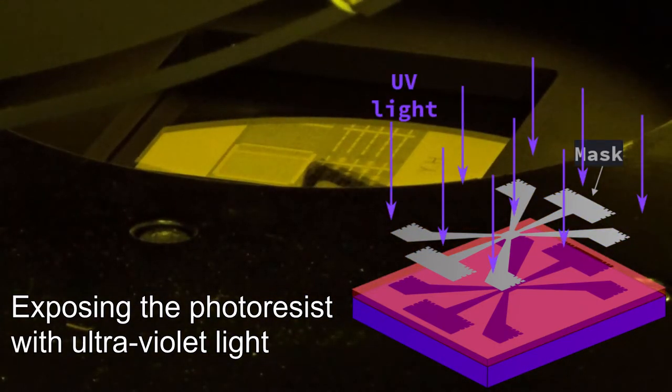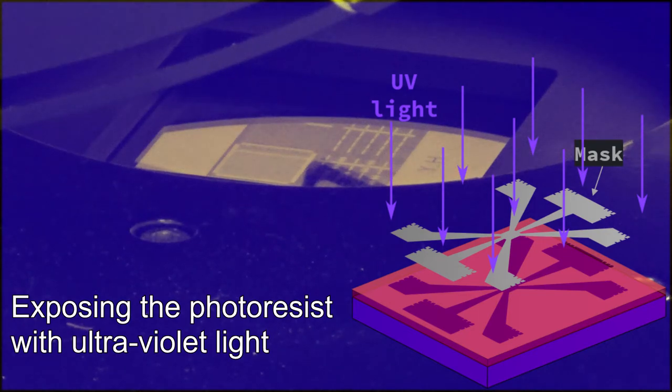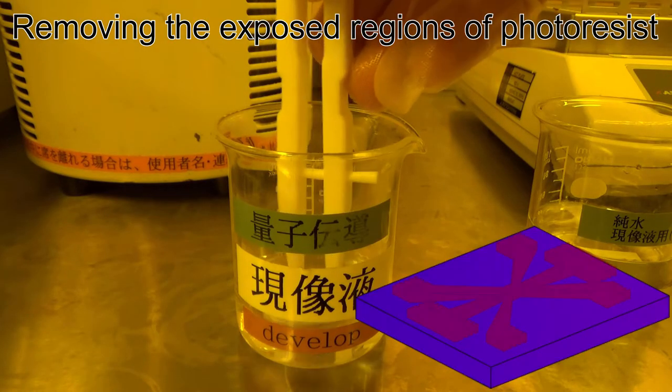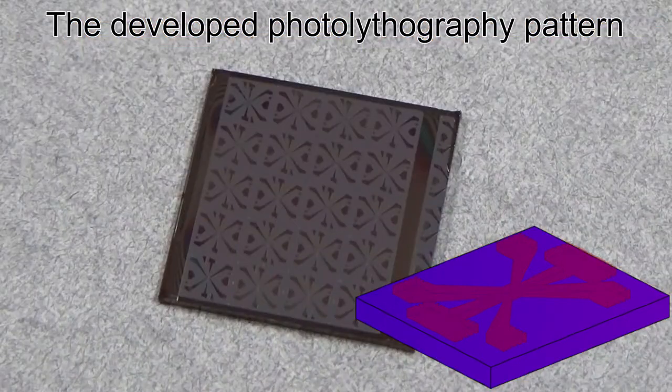This UV light exposure weakens the resist and allows us to remove the exposed regions using a developing fluid. The remaining resist contains our desired pattern.